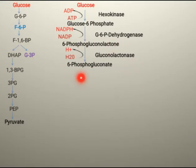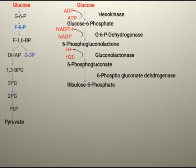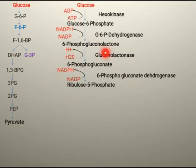6-phosphogluconate is a very important intermediate of this pathway. It is converted into ribulose 5-phosphate by the enzyme 6-phosphogluconate dehydrogenase, which again removes hydrogen from 6-phosphogluconate. That hydrogen is picked up by NADP, converting it again into NADPH. Ribulose 5-phosphate is a very important intermediate used in DNA and nucleotide synthesis.